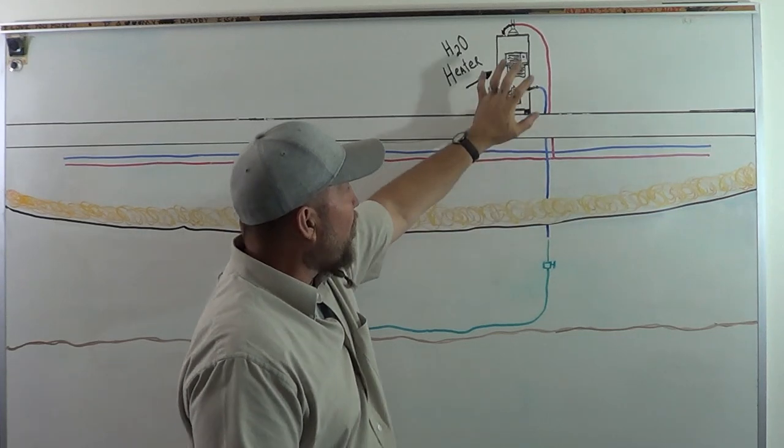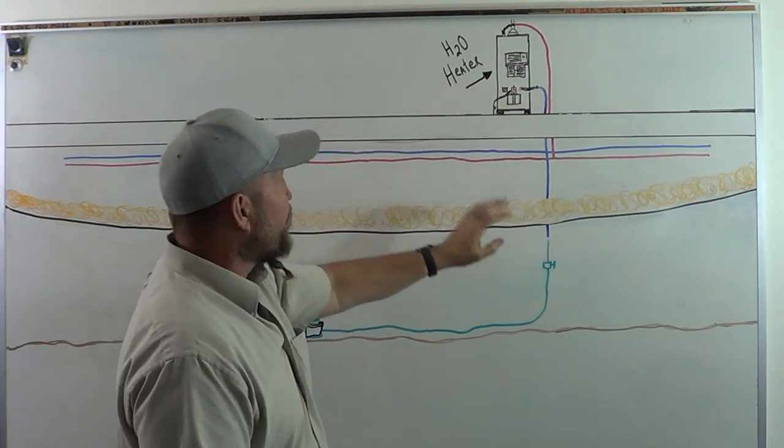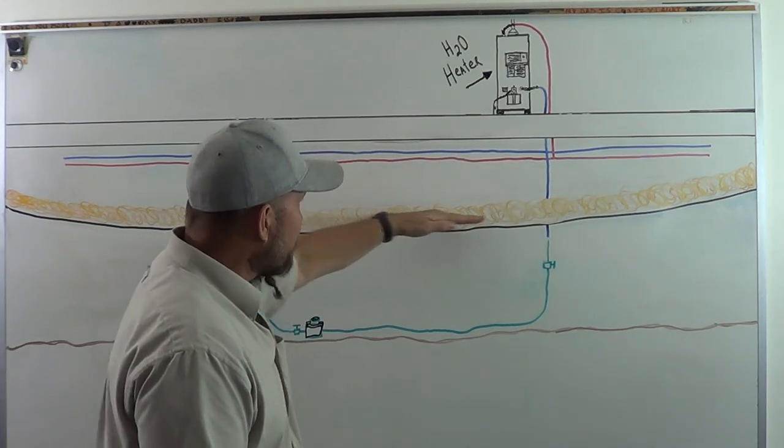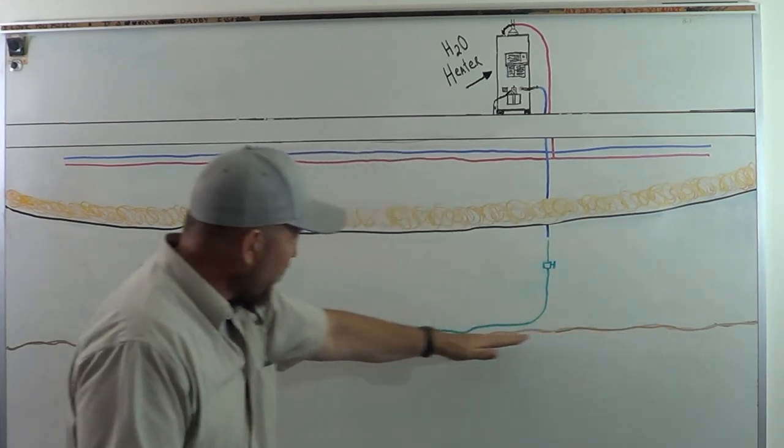And somewhere right underneath the home, most often it's right under the water heater, so if you can locate your water heater, you'll find where your main water drops below the insulation barrier here. Again, this is the ground here.